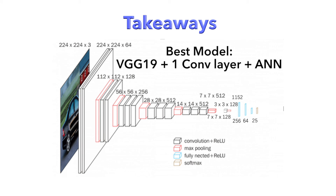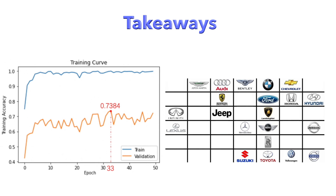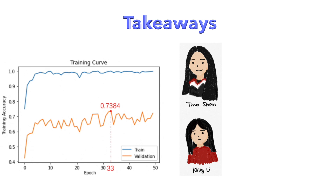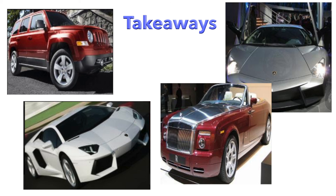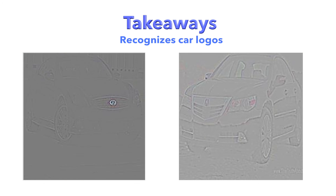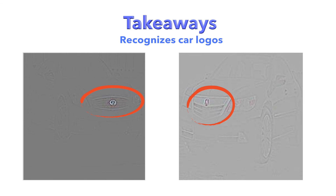Some takeaways from our model: first, the VGG model is very sophisticated. The fact that it is able to predict 60 to 70% of the car labels correctly out of 25 different choices is very impressive. This accuracy is comparable with average humans who are not automotive enthusiasts. To our surprise, the model learned to identify car makes just like humans would — for example, by looking at the general design language of car manufacturers, such as the front grille, headlights, wheels, overall shape, and outline. More importantly, the model learns to focus on defining features such as car logos, if they are available in the image.